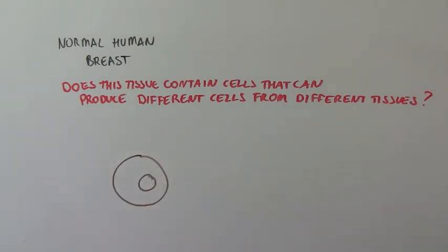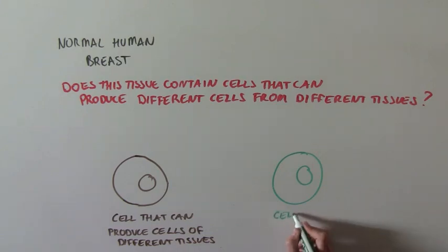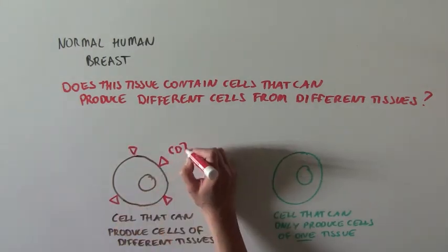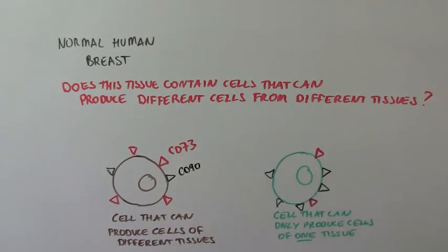To tackle this question, they looked at markers that are located on the surface of the cell that they found to be different between cells that had the ability to produce cells of different organs compared to cells that did not. They found that two cell markers were different between these two types of cells. One marker was increased, CD73, and one marker was decreased, CD90, in cells that could produce cells of different tissues compared to cells that could not.